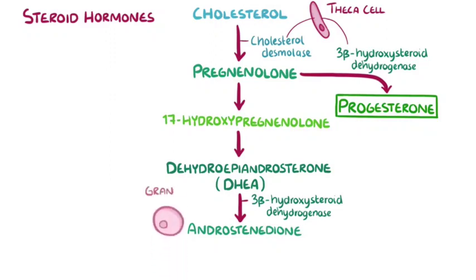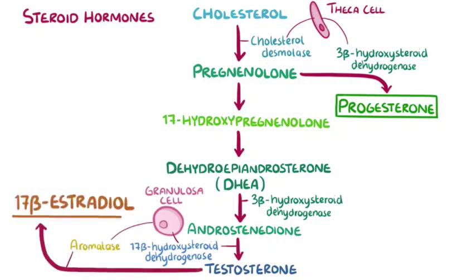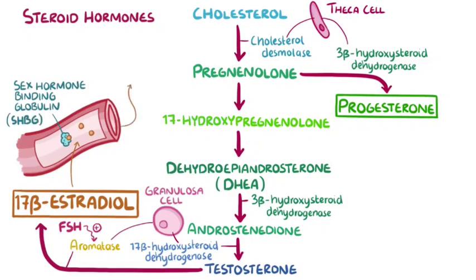Androstenedione diffuses into the nearby granulosa cells, which have two enzymes of their own. The first is 17-beta-hydroxysteroid dehydrogenase, which converts androstenedione into testosterone. And the second is aromatase, which converts testosterone into 17-beta-estradiol, the most biologically active type of estrogen active during the reproductive period. FSH makes aromatase work overtime, so during the follicular phase, a whole lot of 17-beta-estradiol is released into the blood, where it's bound to a plasma protein called sex hormone binding globulin, or SHBG. That carries it to nearby target tissues, such as the uterus and the vagina, and to other cells and tissues in the body that respond to estrogen stimulation, such as the bones and the blood vessels.